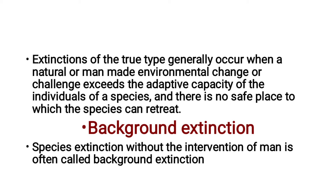Extinctions of the true type generally occur when a natural or man-made environmental change or challenge exceeds the adaptive capacity of the individuals of a species, and there is no safe place to which the species can retreat.